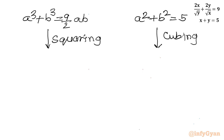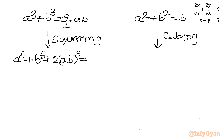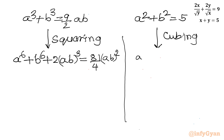Squaring the first equation: a cubed plus b cubed, whole squared gives a to the 6th plus b to the 6th plus 2a cubed b cubed, and the right-hand side gives 81 a squared b squared over 4. For the cubing of the second equation, a to the 6th plus b to the 6th, using the formula with 3ab squared times a squared plus b squared.